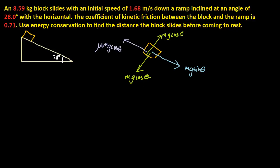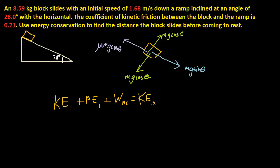Now let's figure out how far the block travels before coming to rest. We have a non-conservative force in the mix — the frictional force — so we write the energy equation a little differently. It's KE1 plus PE1 plus the non-conservative work equals KE2 plus PE2. We're just adding this non-conservative work term into the mix.